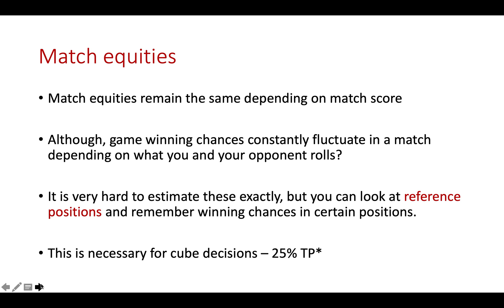Match equities remain the same depending on what match score you are. They are concrete, fixed and they don't change. However, game winning chances are different and they constantly fluctuate within the match, depending on what you and your opponent roll. So when we start an individual game within a match, we both have 50 percent winning chances because neither of us have rolled yet.